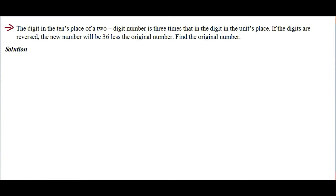Hello friends, welcome to LearningPoints. Today's problem is: the digit in the tenth place of a two-digit number is three times that in the units place. If the digits are reversed, the new number will be 36 less than the original number.